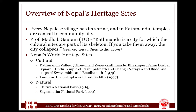Nepal has two types of heritage listed in UNESCO World Heritage sites: cultural and natural. Natural heritage sites include Chitwan National Park and Sagarmatha National Park. Cultural heritage sites include seven monumental zones of Kathmandu Valley and Lumbini, the birthplace of Buddha, which lies in the southern belt of the country. Among the seven monumental zones, three are the Darbar squares of Kathmandu, Patan, and Bhaktapur; two are the Hindu temples of Pasupatinath and Changunarayan; and two are the Buddhist stupas of Swoembu and Baudunath.